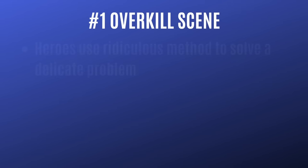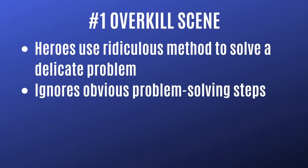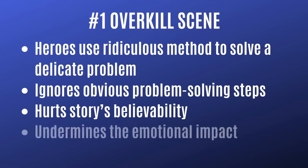The overkill scene is when a hero uses a ridiculous method to solve a delicate problem. It's often a case of rushing or ignoring the obvious problem-solving steps. There might be a natural way to solve the problem that requires a few steps, but instead the heroes jump toward the end — toward the final solution or an extreme solution. Scenes like this hurt the story's believability and often disrupt the emotional impact of the scene.